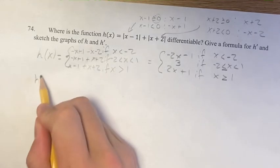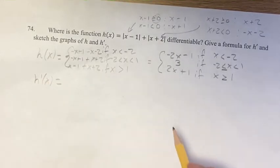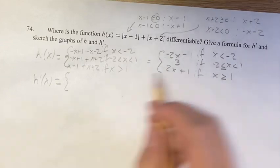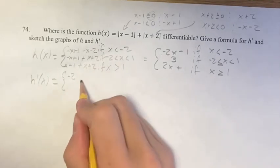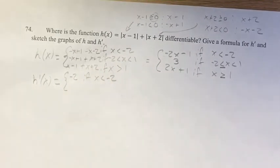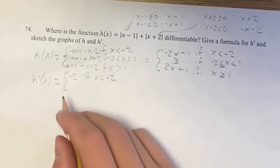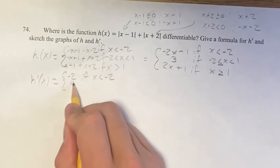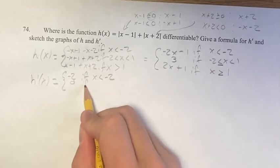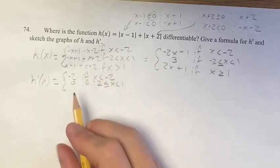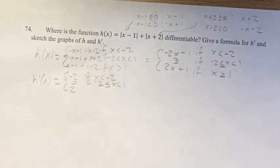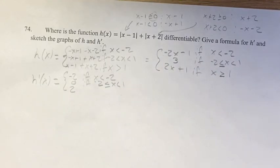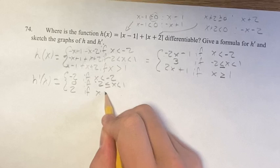We have a piecewise function, and we can take the derivative of each piece. For negative 2x minus 1, it's a linear equation, so the derivative is just its coefficient: negative 2. The derivative of the constant is 0, so we ignore that. For the constant 3, the derivative is 0. For 2x plus 1, the coefficient gives a derivative of 2.